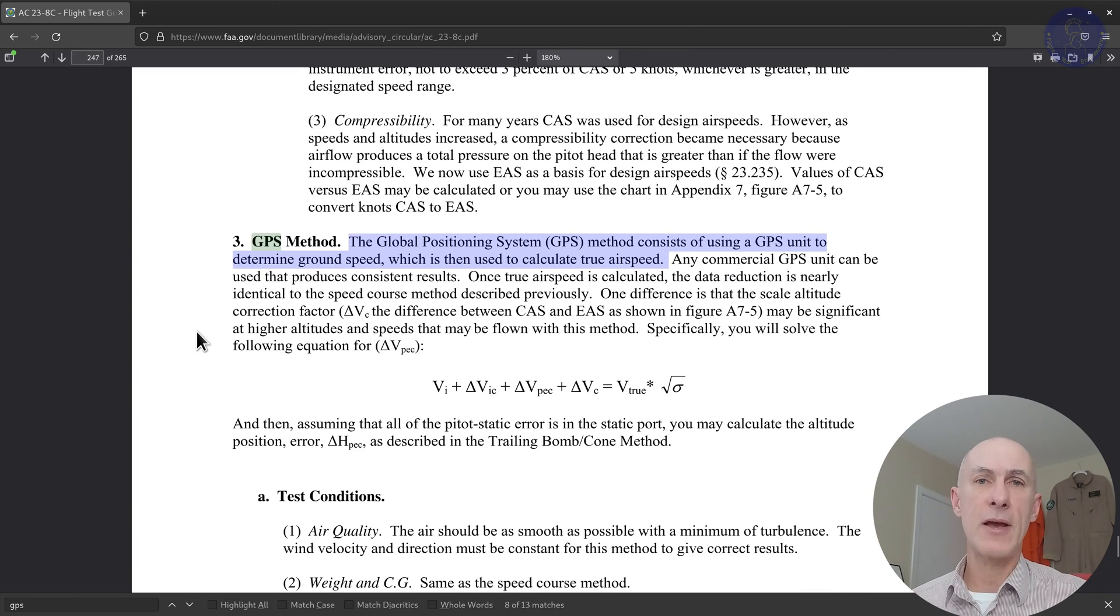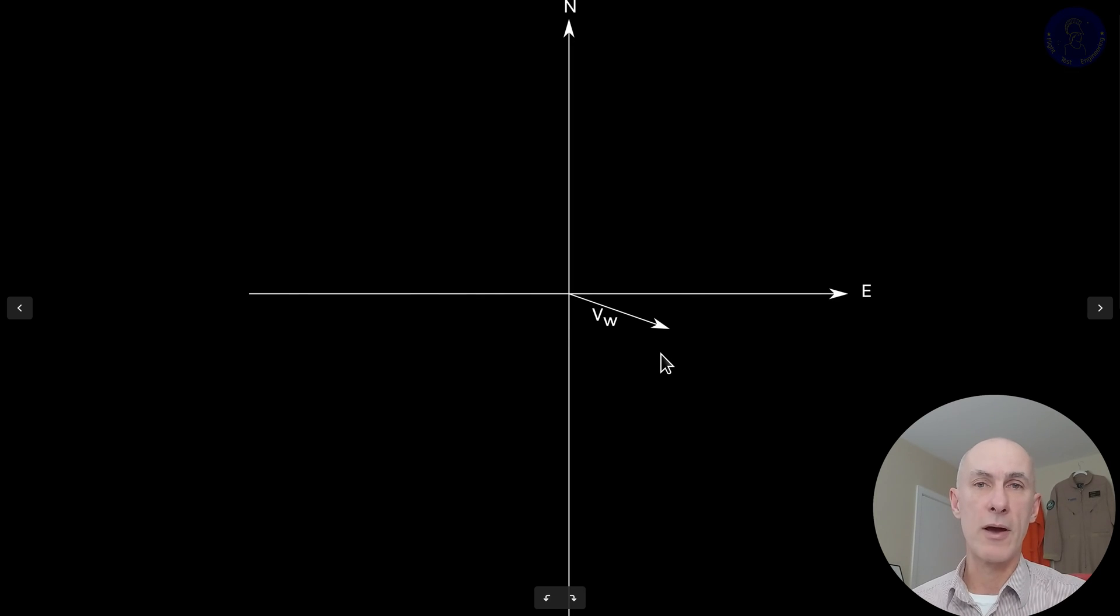When we're going to flight test our vehicle, we start off with the ambient conditions, which includes wind. And one basic assumption for this method is that wind is constant throughout all of the test point execution. So, let's plot first the wind here at the origin of our coordinate system with a vector like this, denoting a wind condition that we don't know. We then set out to do our first test point.